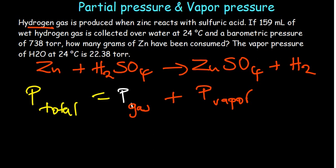Understanding the question further, we are told, we are given the volume of the hydrogen gas that was collected. We are also given the temperature. And then we are given the pressure of the mixture, which is the barometric pressure. And then we've been asked to determine how many grams of zinc were used up. The vapor pressure of water has been given.